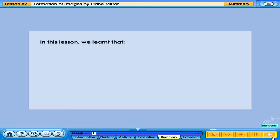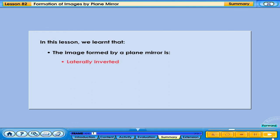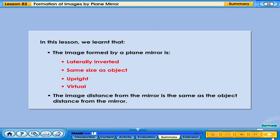In this lesson, we learnt that the image formed by a plane mirror is laterally inverted, the same size as the object, upright, and virtual. The image distance from the mirror is the same as the object distance from the mirror.